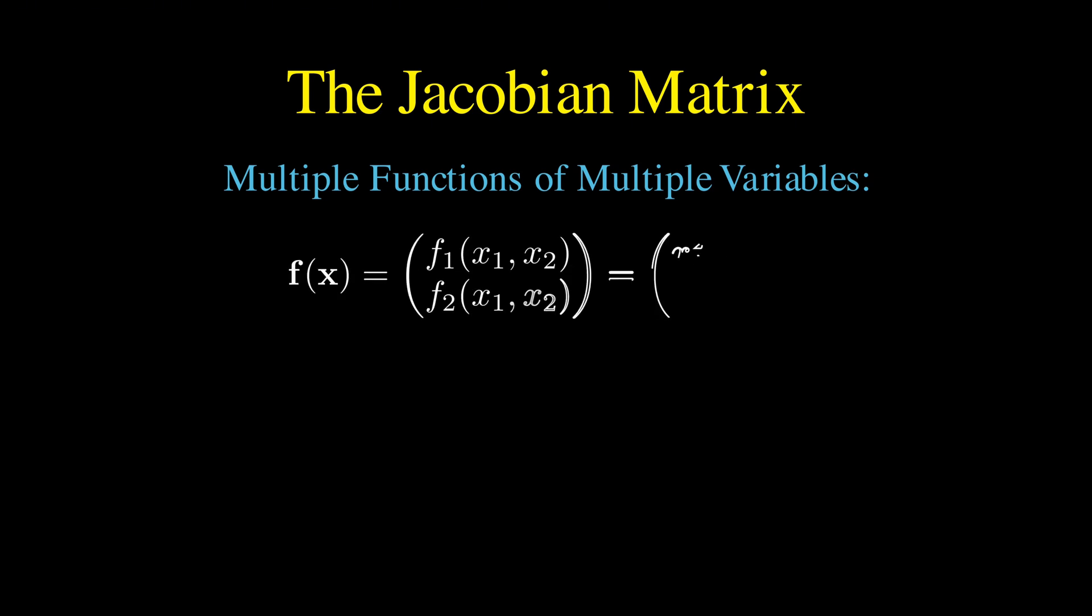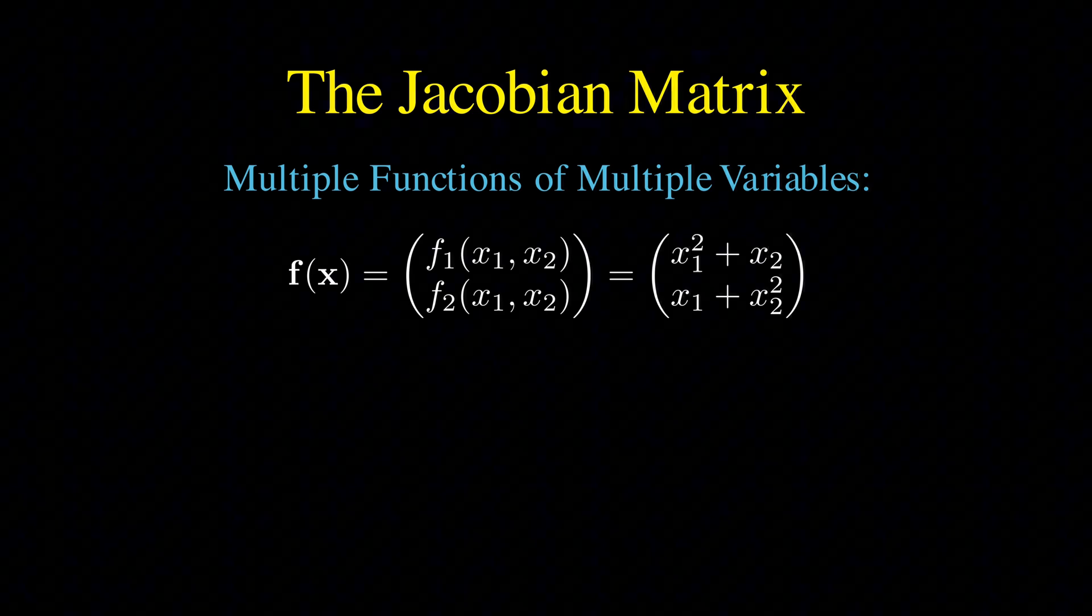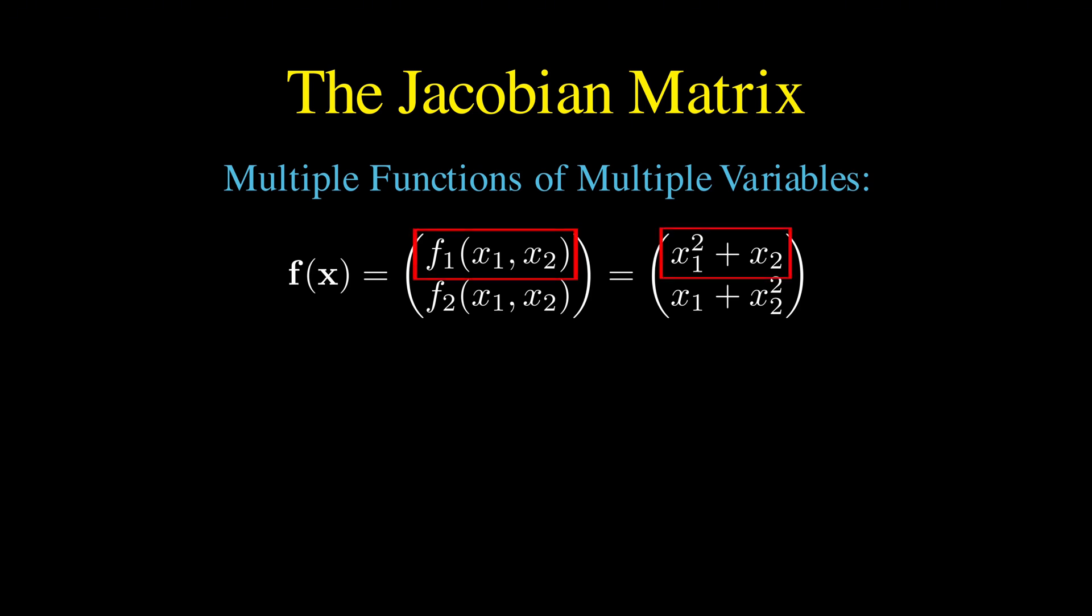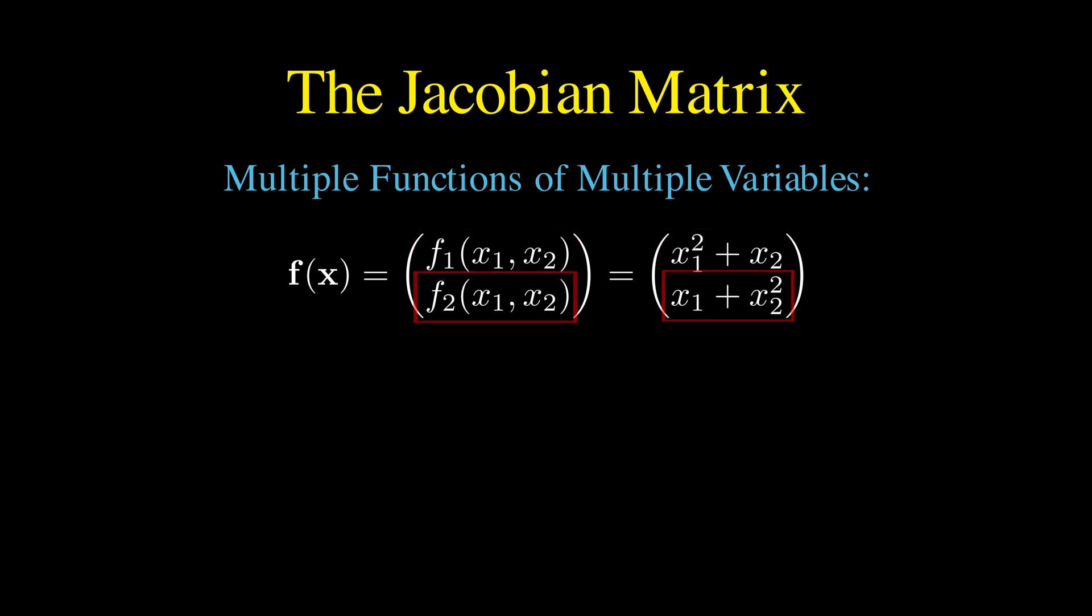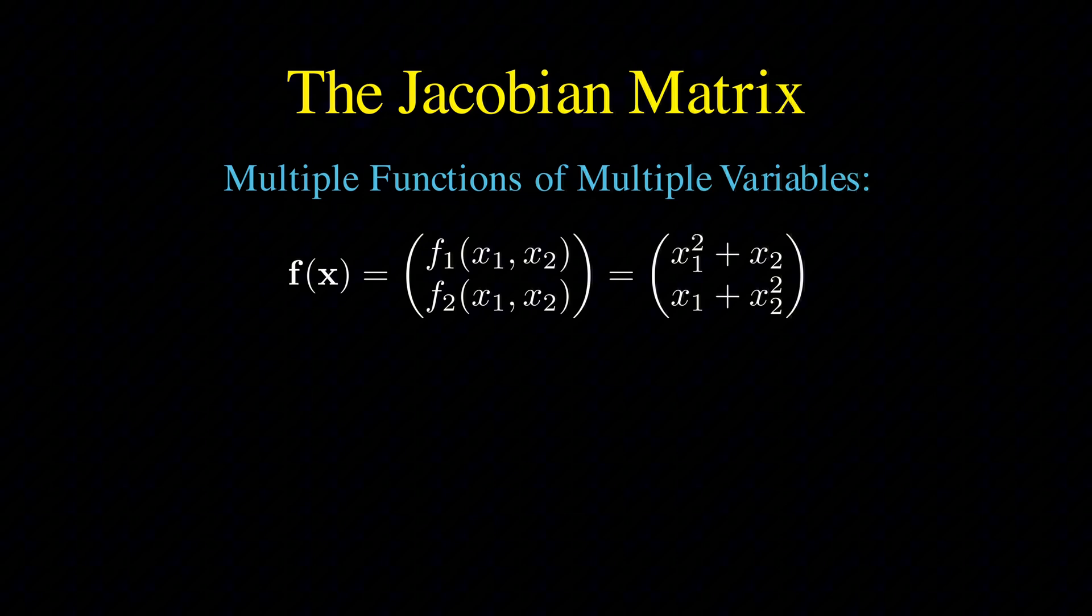Imagine a vector-valued function f that takes a vector containing x1 and x2 as input and produces a vector containing two output functions, f1 of x1 and x2 and f2 of x1 and x2.